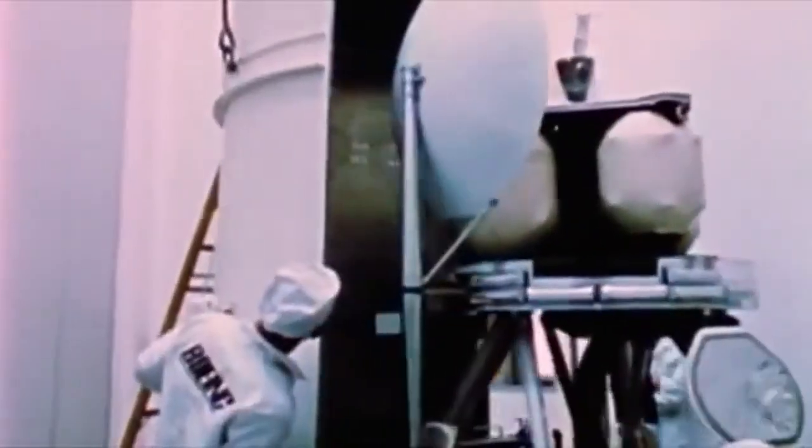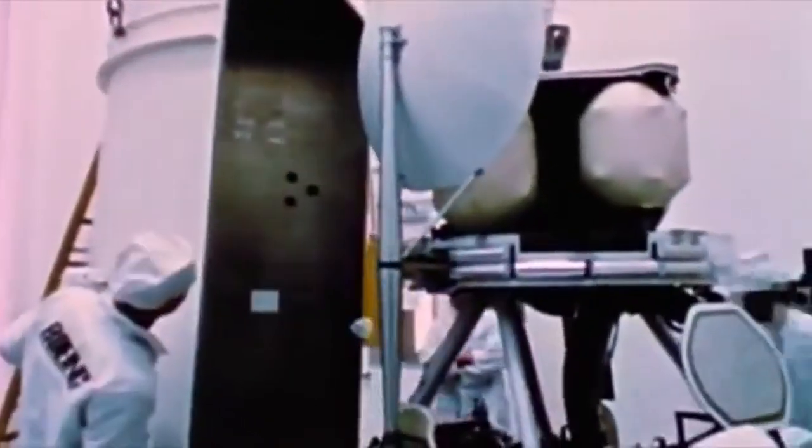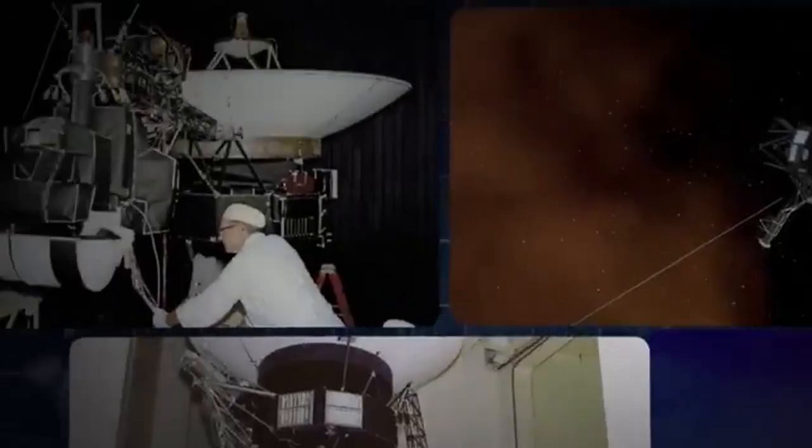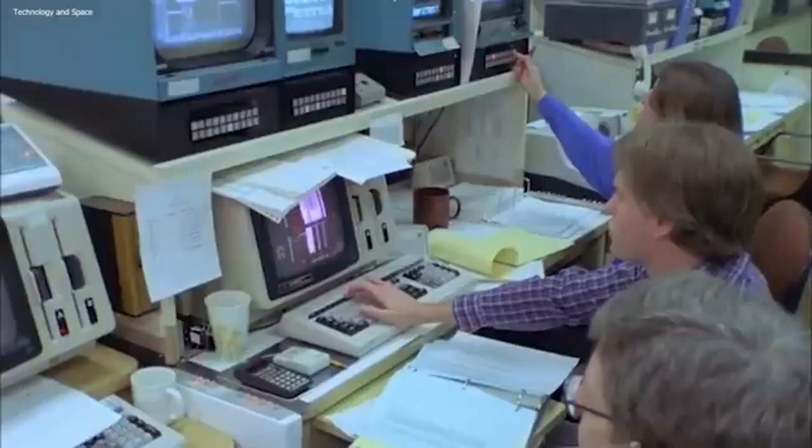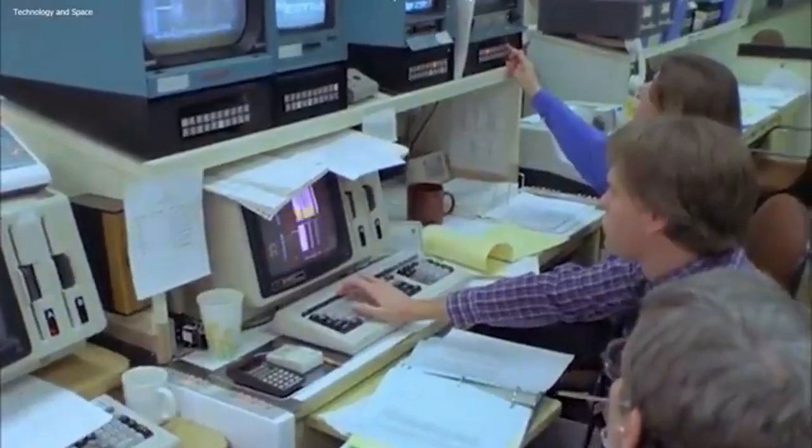Micrometeoroids, tiny dust particles or fragments of comets and asteroids, travel at high speeds and can cause damage upon impact. Even a minuscule collision with a sensitive electronic component can disrupt functionality or create interference in data transmission.